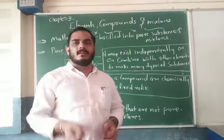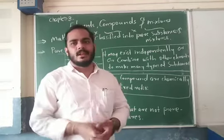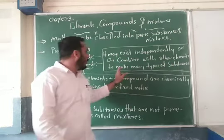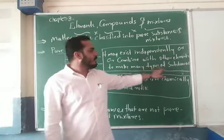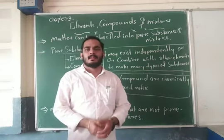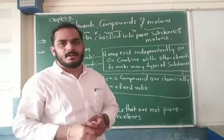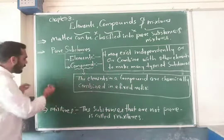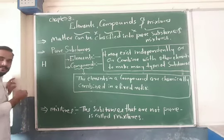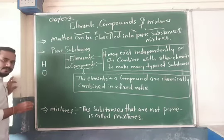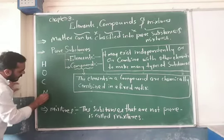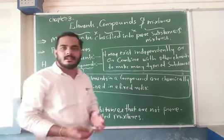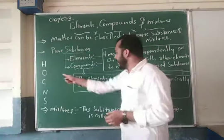An element may exist independently or be combined with other elements to make many types of substance. Some examples of elements are: hydrogen, oxygen, carbon, nitrogen, and sulfur. These are all different elements.